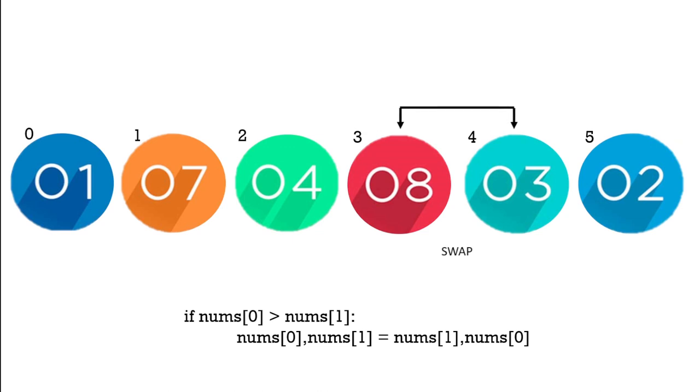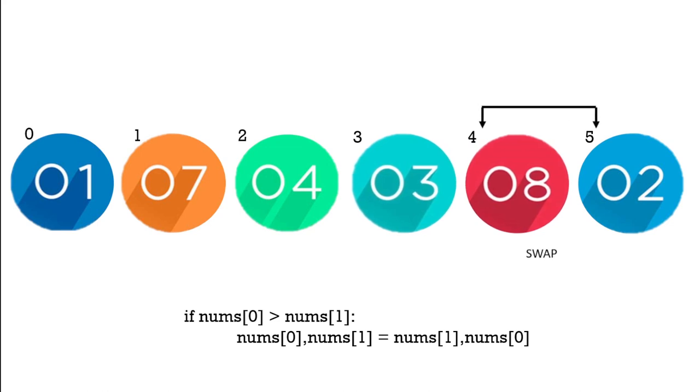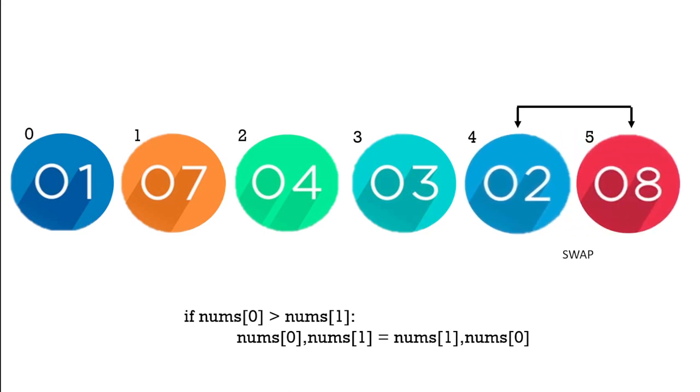It compares each element with the next element and swaps their position if they are in the wrong order. It's called a bubble sort because the smaller elements bubble to the top of the list and the larger elements sink to the bottom.